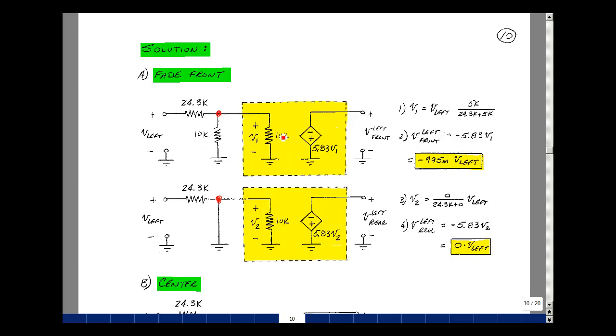So what's the voltage here? Well, I've got 10k in parallel with 10k. Voltage divided with 24.3k. So that's 5k over 24.3k plus 5k times that left channel music. Then that voltage sees a gain of minus 5.83. So I'm just going to multiply this times this. And what I get is about almost 1. It's 0.995 times that left music input.